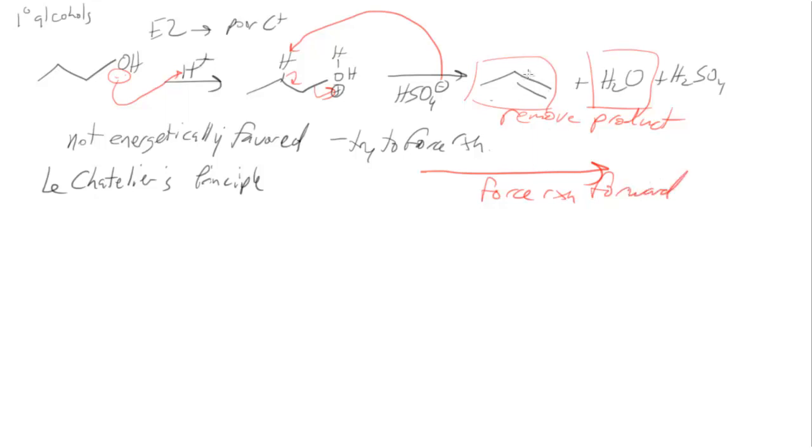There's two ways of doing that. In this case, the alkene is going to be lower boiling than either water or the alcohol because there's no hydrogen bonding. There's not even dipole-dipole interactions. And so we would be able to boil off the product and leave the other materials behind and that can force this reaction forward.